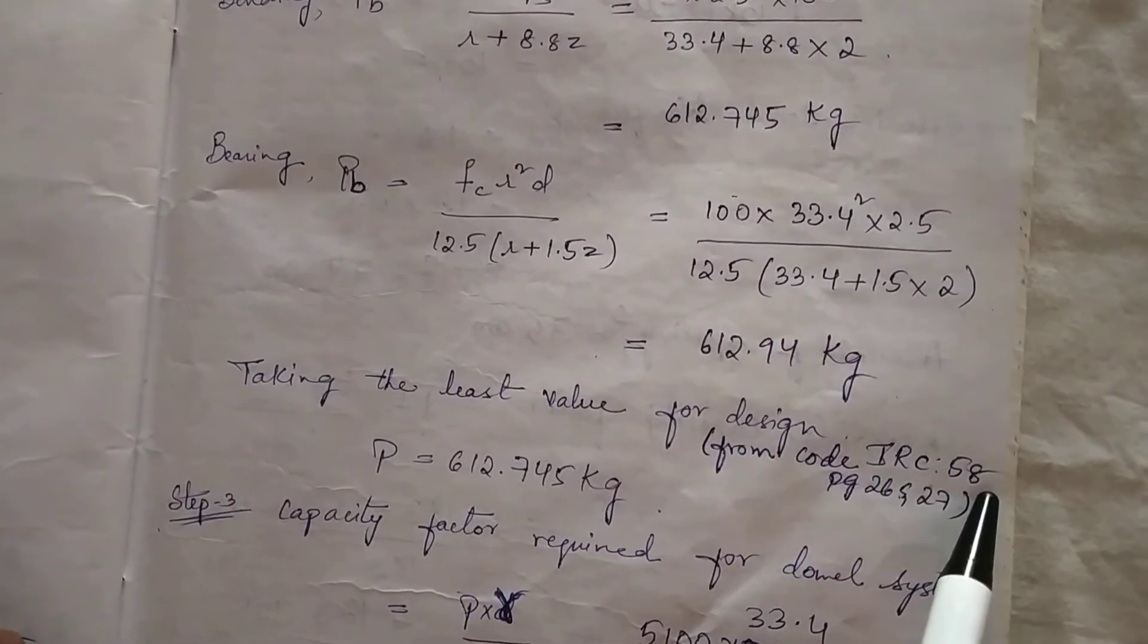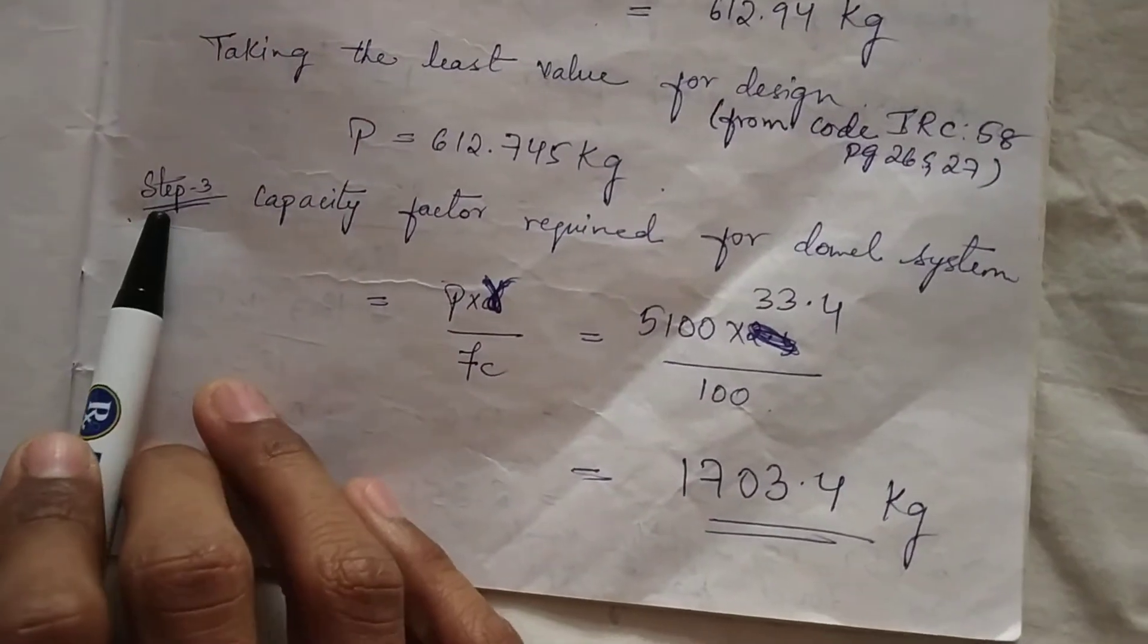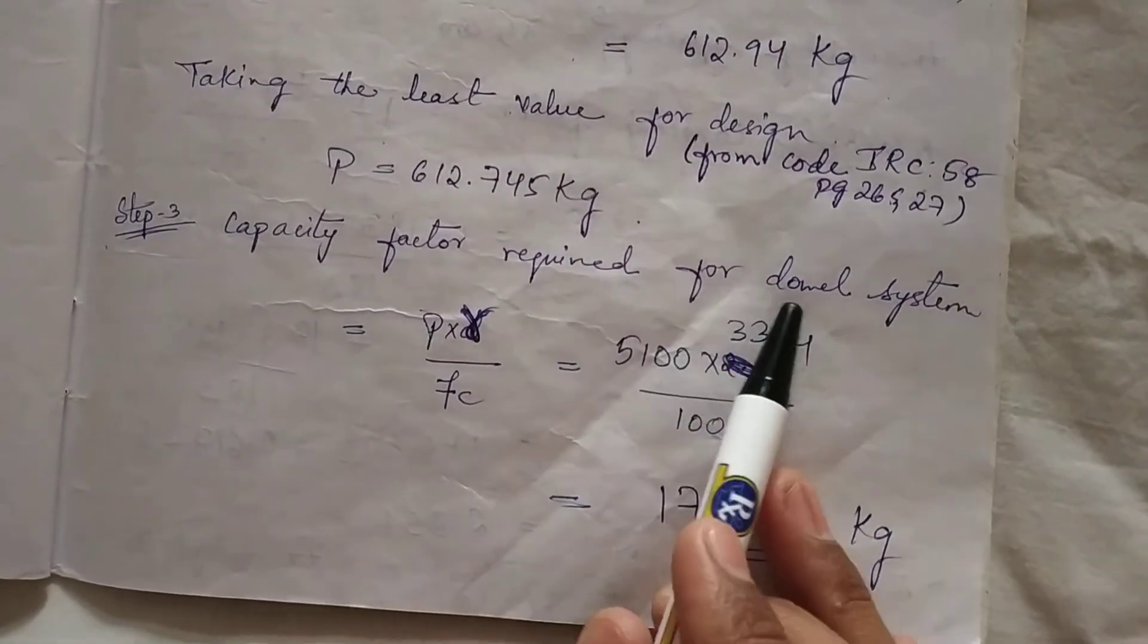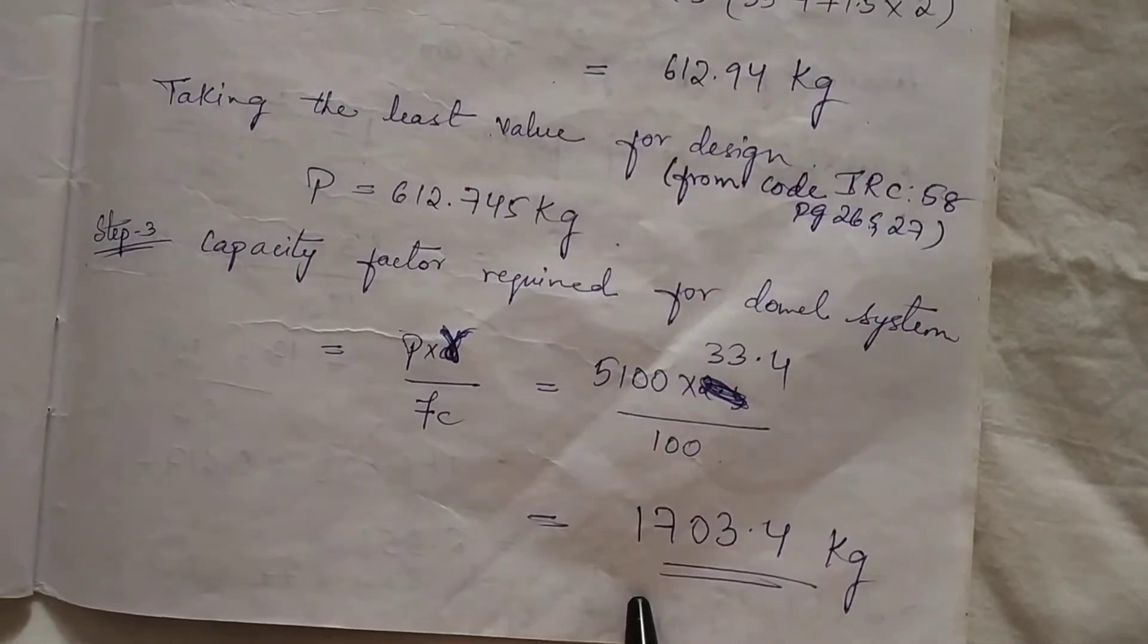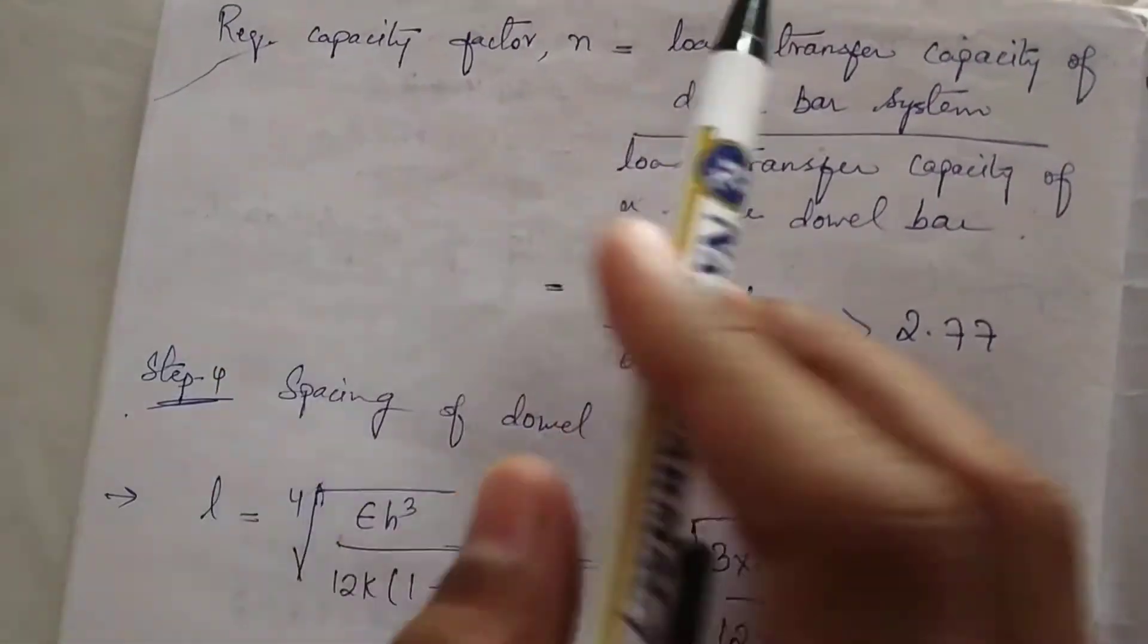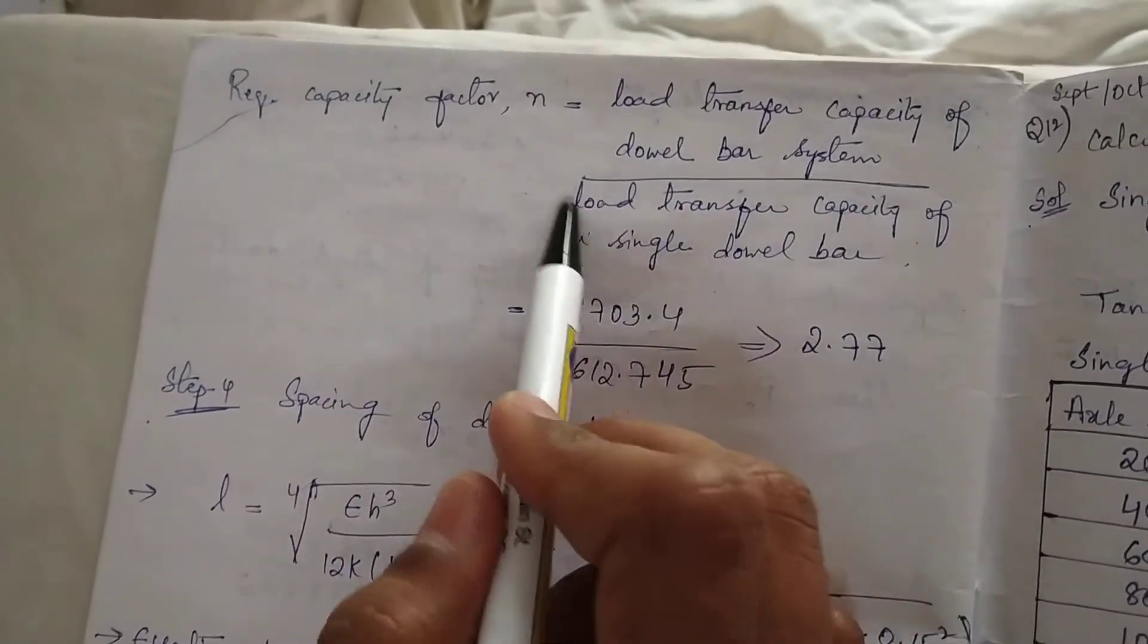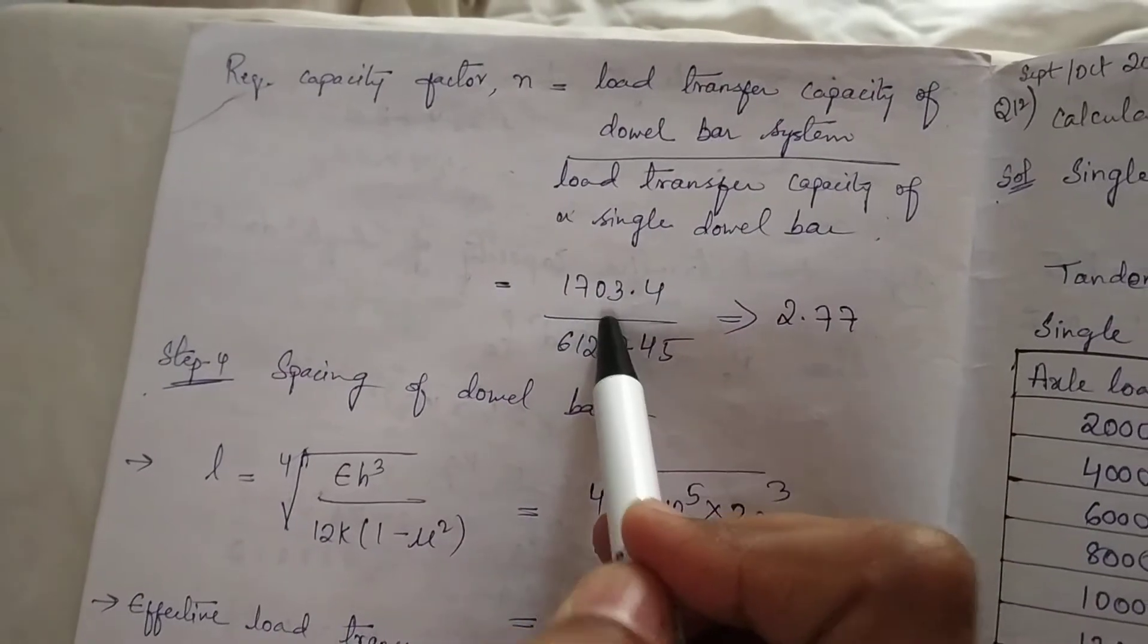Step 3: Calculation of capacity factor required for the dowel system. We have the formula Pr / Fc. Substitute the values, we will get result in kg. Now calculate the required capacity factor n = load transfer capacity of the dowel bar system / load transfer capacity of a single dowel bar.